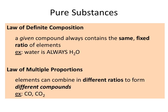When talking about pure substances, there are a couple of laws to keep in mind. The law of definite composition states that any substance is always going to have a specific fixed ratio of elements in the compound. H2O, for instance, is always going to have two hydrogens and one oxygen. If I were to change that and have a compound with the formula H2O2, that would be an entirely different substance — even though it contains hydrogen and oxygen, the ratio changes the characteristics. That substance is actually peroxide.